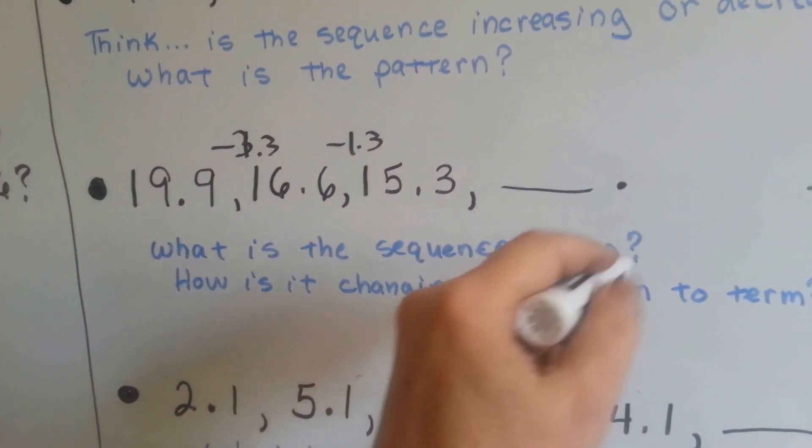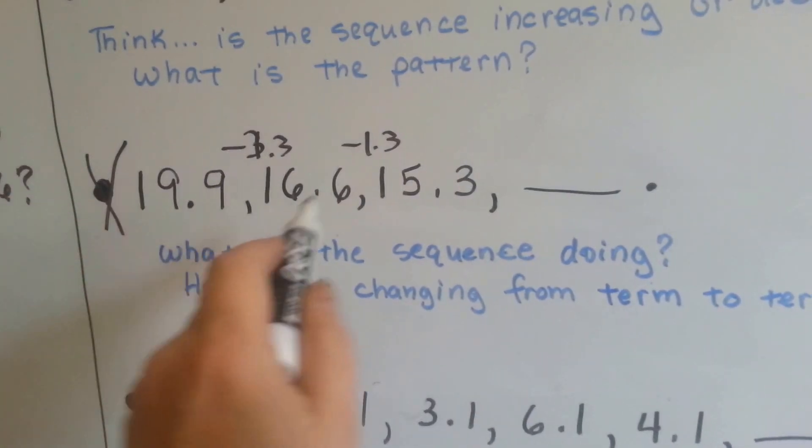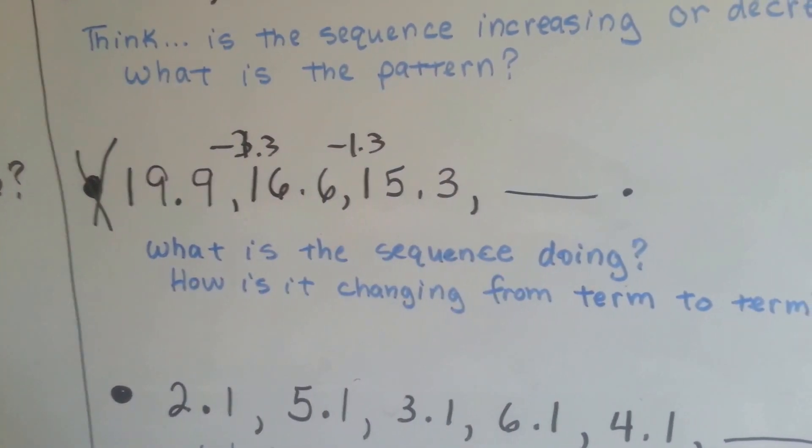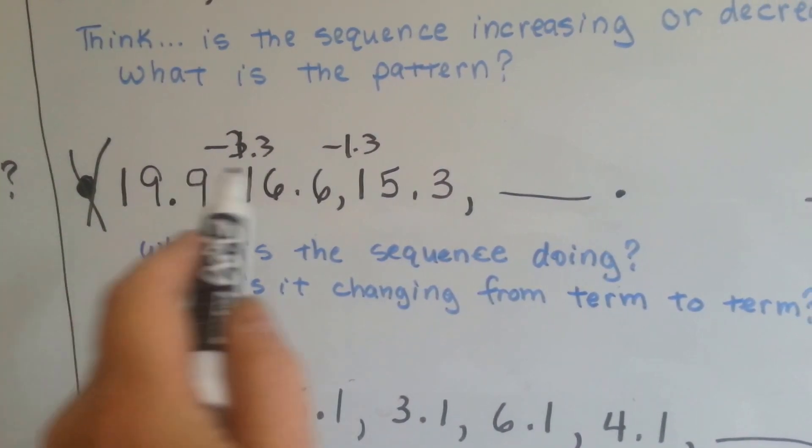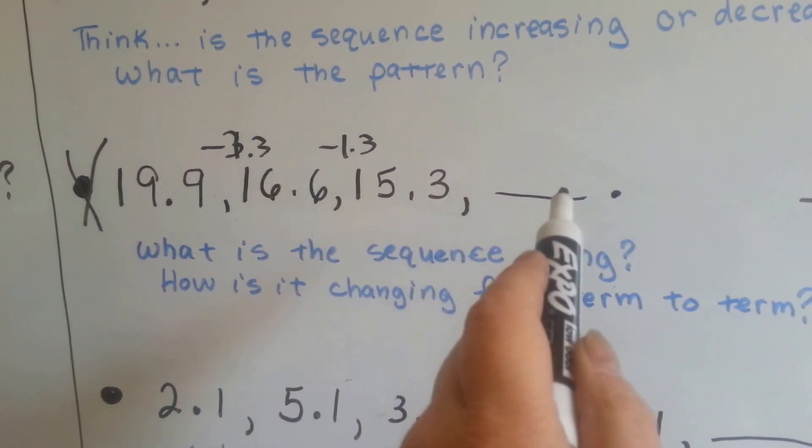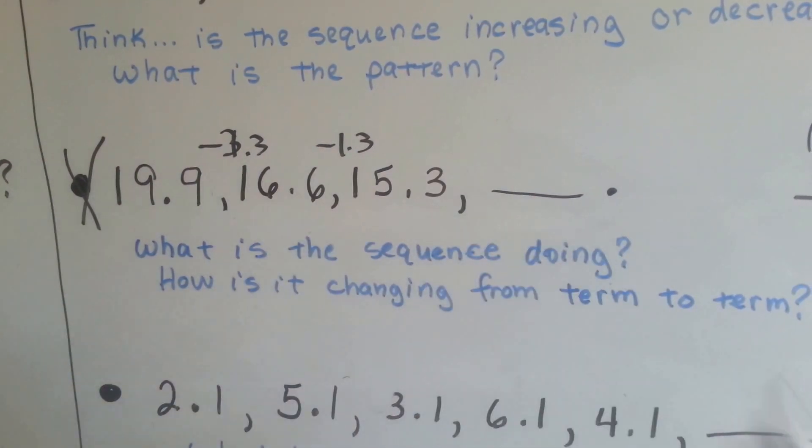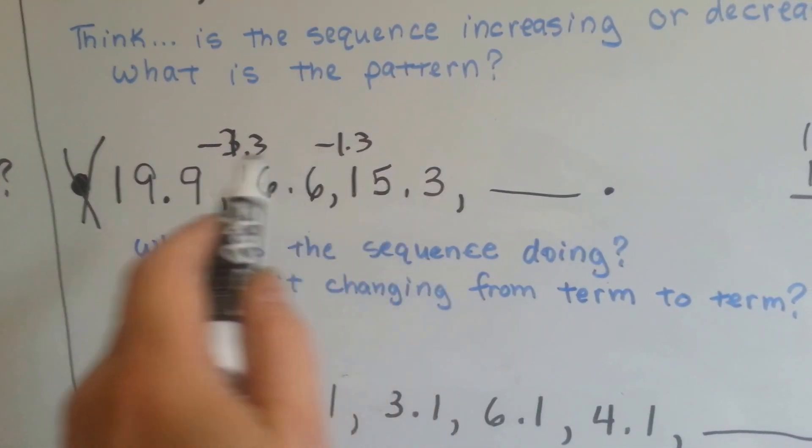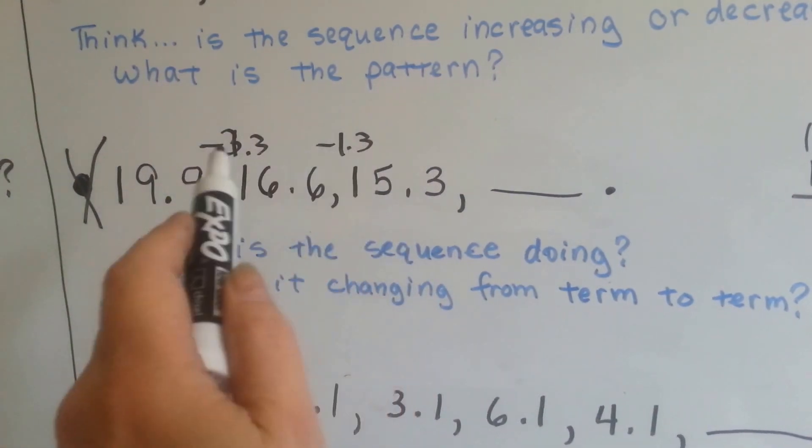You know what? You can't. We can't do this one because we don't have enough information. So sometimes when you're doing a sequence, you don't have enough given information to be able to answer the next one. We don't have enough of a pattern. It only changed 2 times.